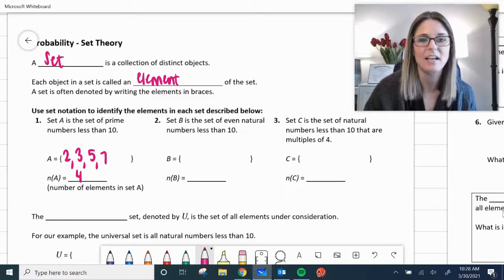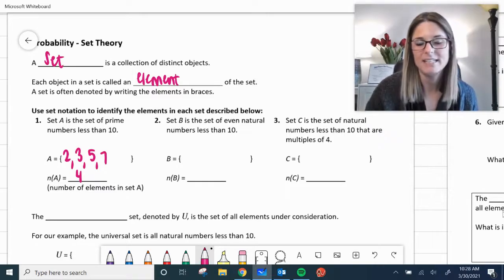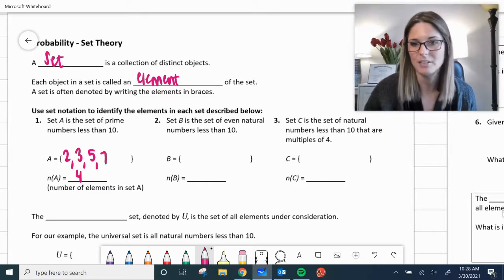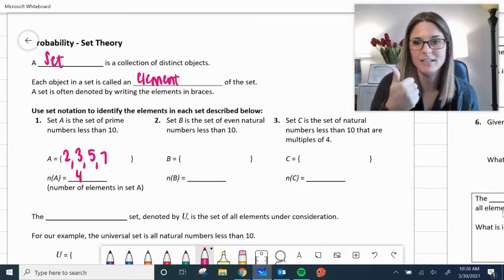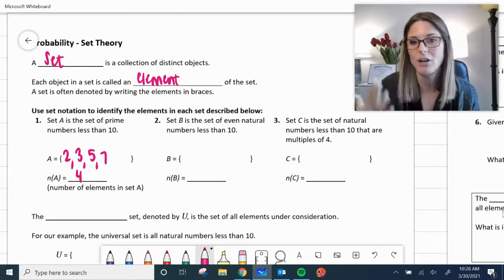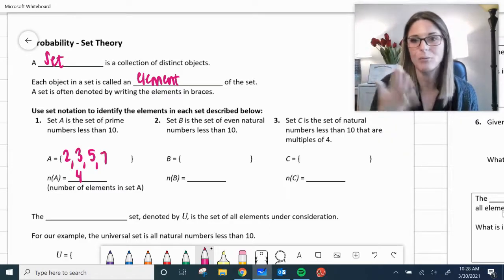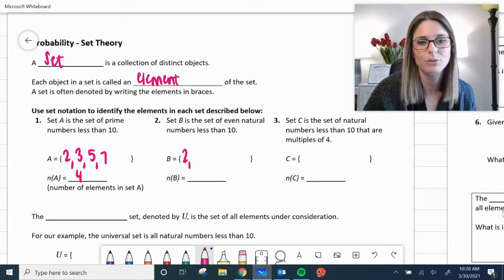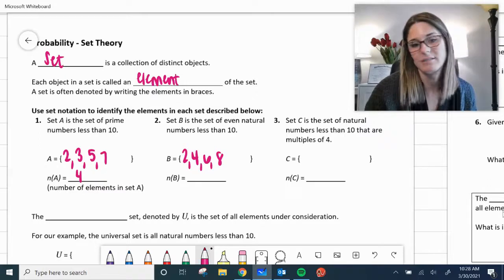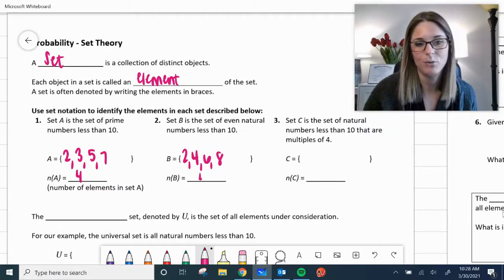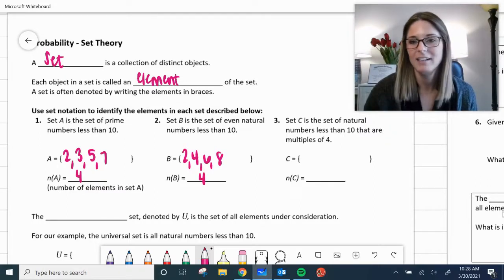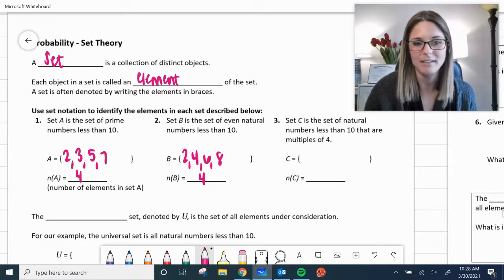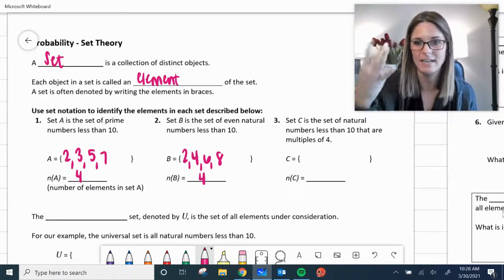Set B, the set of even natural numbers less than 10. So evens, natural numbers are what you naturally started talking, started counting with 1, 2, 3, 4, 5 as a child and less than 10. So that would be 2, 4, 6, and 8. So again, we only have 4 elements in our set B, number 2, 4, 6, and 8, 4 numbers.